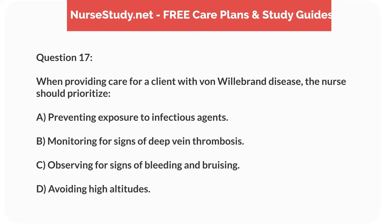Question 17. When providing care for a client with von Willebrand disease, the nurse should prioritize: A. Preventing exposure to infectious agents. B. Monitoring for signs of deep vein thrombosis. C. Observing for signs of bleeding and bruising. D. Avoiding high altitudes.